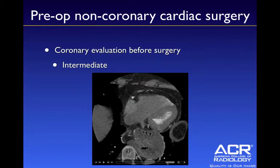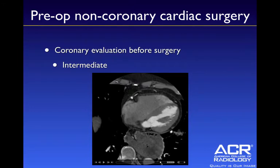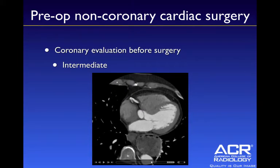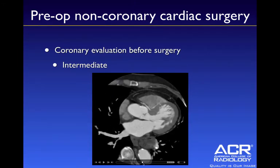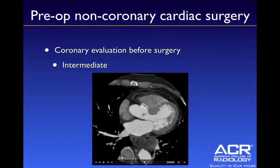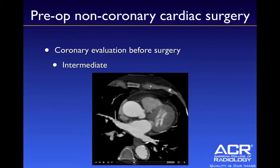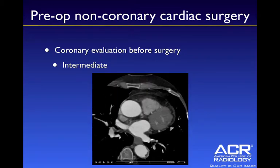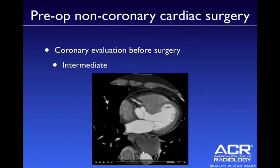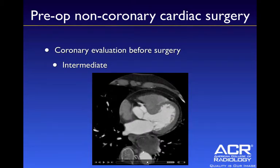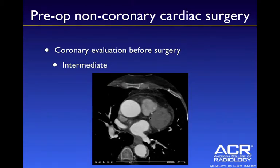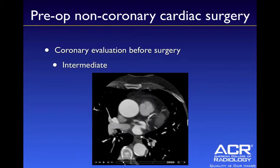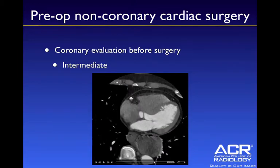Here's a case example from our institution. This was a patient going to have a thoracoabdominal aneurysm repair, so we were evaluating the coronary arteries prior to that. Interestingly, we found incidentally a single coronary artery ostium — only one ostium arising from the aorta, from the right coronary cusp, supplying the right coronary artery as well as coming across to supply the LAD and circumflex coronary artery as well.